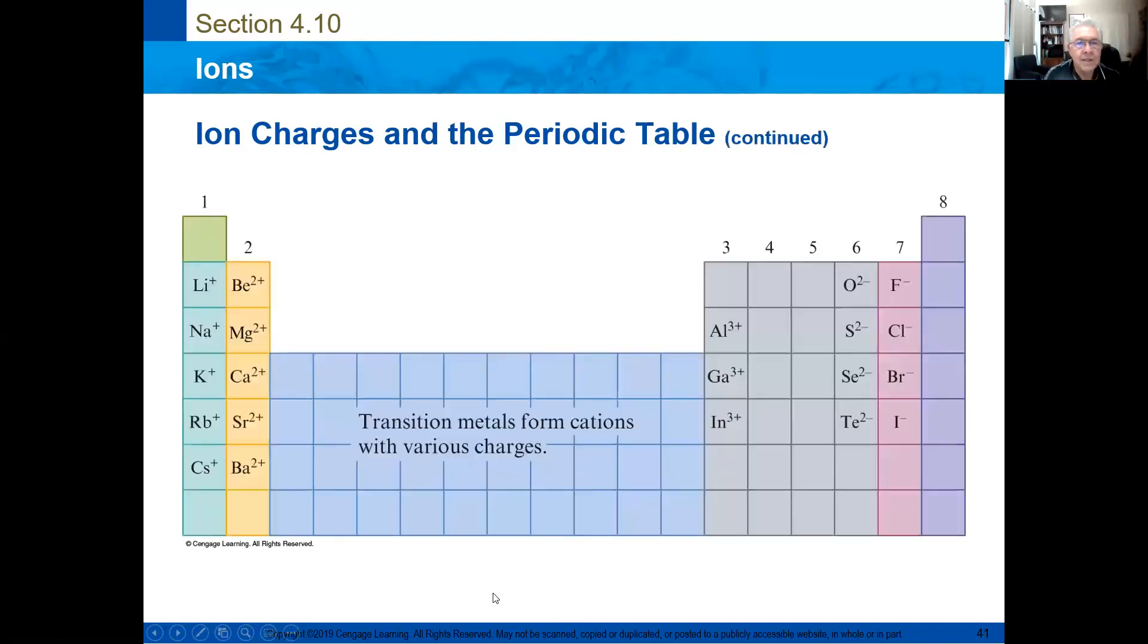Here you can see the most characteristic charges in the periodic table. Group one, positive one. Group two, positive two. Group three, positive three. Group six, negative two. And group seven, negative one.